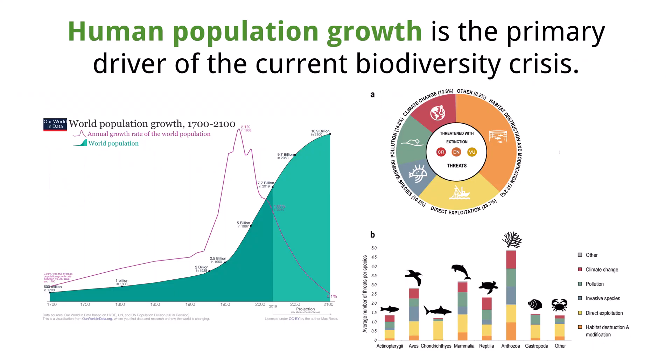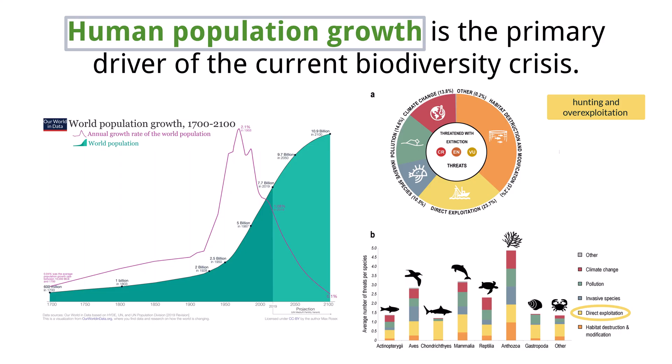The primary driver behind the current biodiversity crisis is ever-increasing human population growth, which puts immense pressure on Earth's natural resources and systems. One major factor is hunting and other forms of over-exploitation, where species are harvested at unsustainable rates for food, medicine, and other products, pushing their populations to collapse. Another significant cause is urbanization — the expansion of cities and towns — which directly destroys and fragments natural habitats. Similarly, deforestation and land clearance for agriculture cause massive habitat loss, as vast areas of forests, grasslands, and wetlands are converted into farms or pastures.